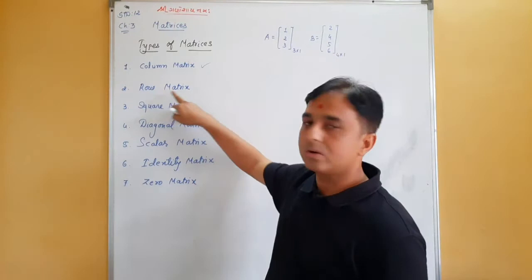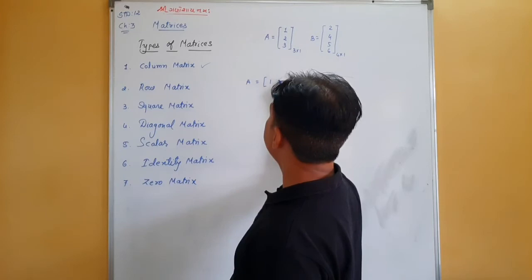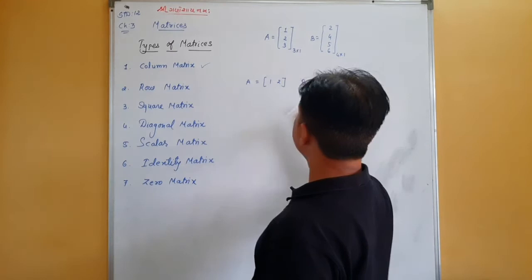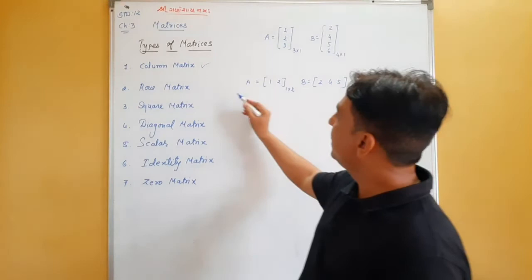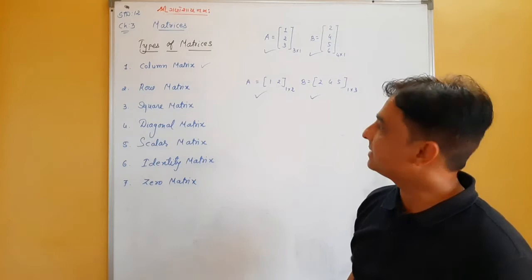A row matrix has only one row. For example, [1, 2] is a 1×2 row matrix, and [2, 4, 5] is a 1×3 row matrix — one row and three columns. These are row matrices.